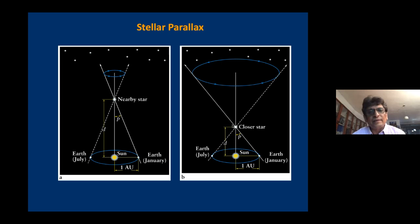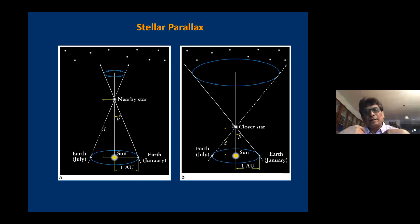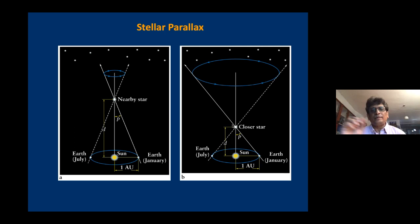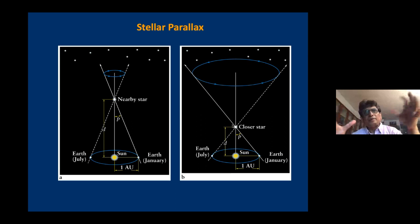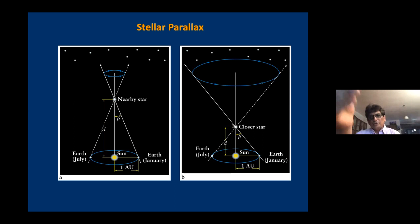There are other coordinate systems — for example, galactic coordinates use the plane of the galaxy as the equatorial plane. Normally we use celestial coordinates. One of the most important things in astronomy is measuring distances. Without distances, you wouldn't know how bright or how big something is. The sun and the moon appear the same angular size in the sky, but one is roughly a thousand times bigger than the other — they are simply at different distances.